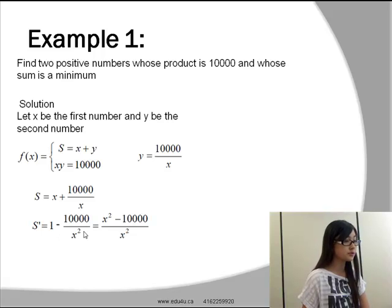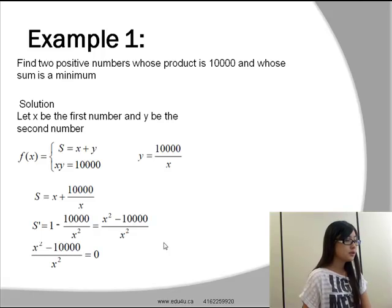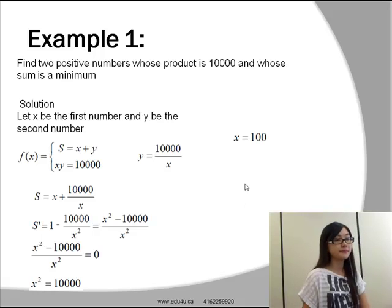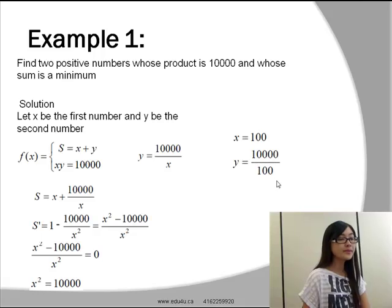The derivative of s will be equal to 1 minus 10,000 over x squared, which is equal to x squared minus 10,000 over x squared. To find the minimum value for s, we will have to make the derivative of s equal to 0, which means x squared will be equal to 10,000. X is then equal to 100 because it is a positive number.